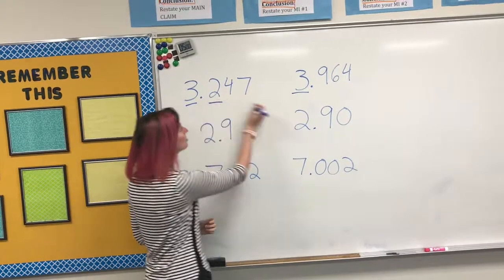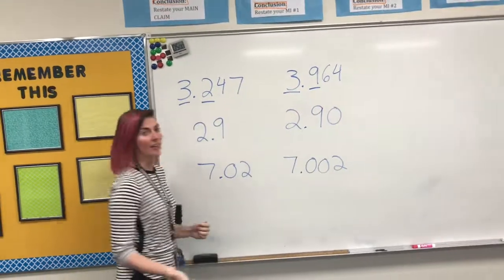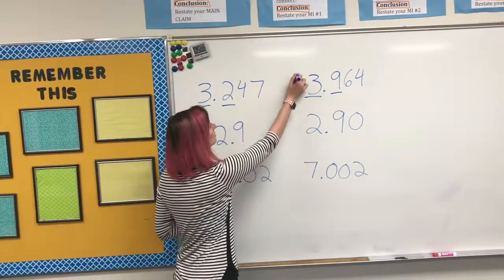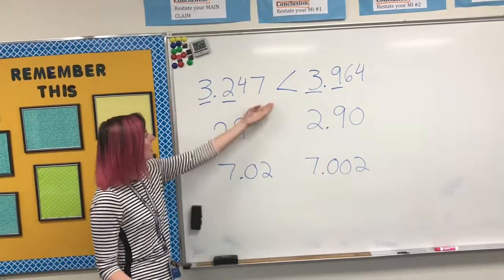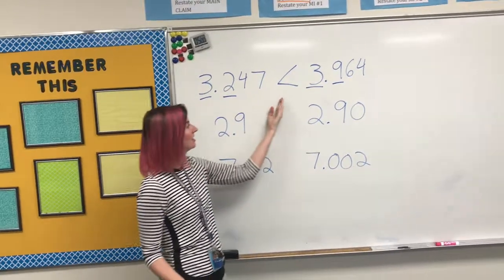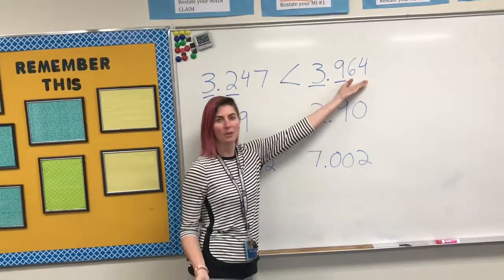So we're into the tenths. We have a 2 and a 9. 9 is greater than 2, so we set up our inequality, and this is our answer. 3 and 247 thousandths is less than 3 and 964 thousandths.